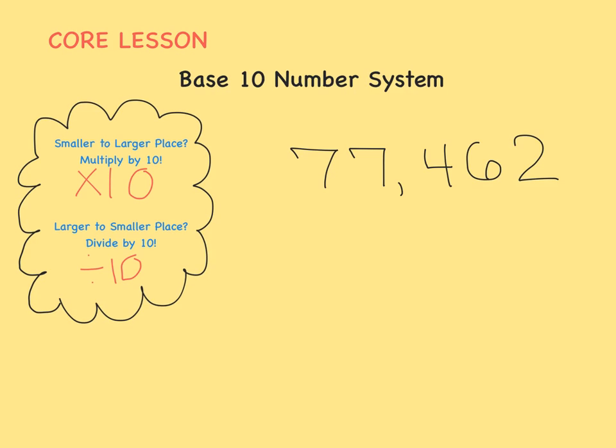Let's compare the 7 in the 10,000th place to the 7 in the 1,000th place. Well, the 7 in the 10,000th place has a value of 70,000. The 7 in the 1,000th place has a value of 7,000. It's only one place over, so we divide by 10 one time.